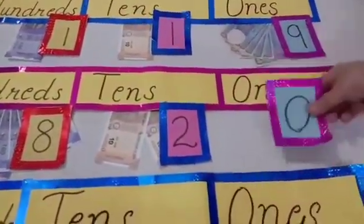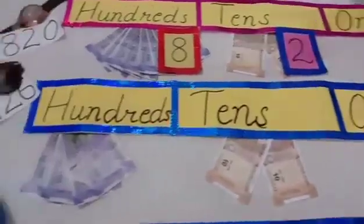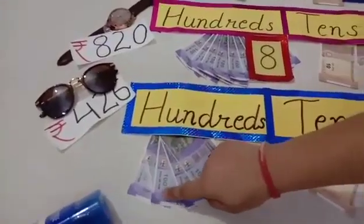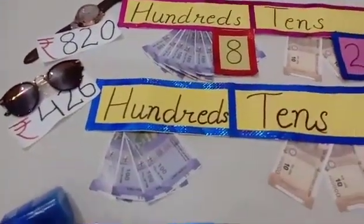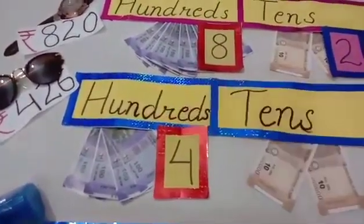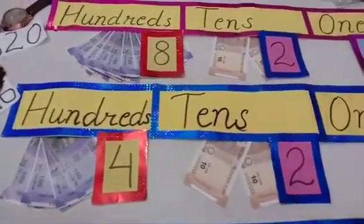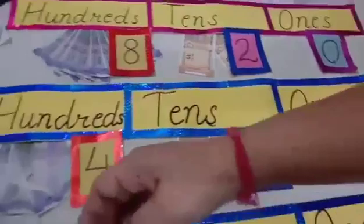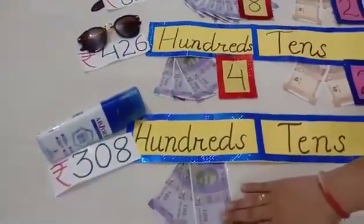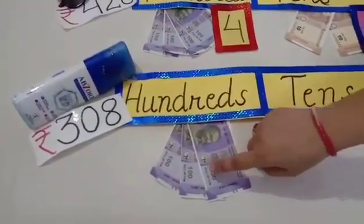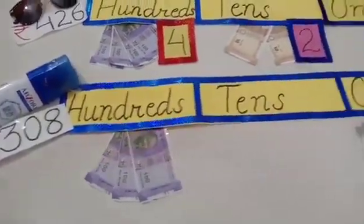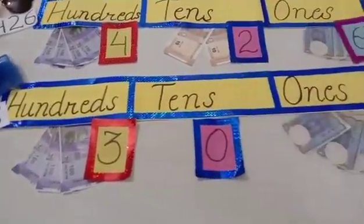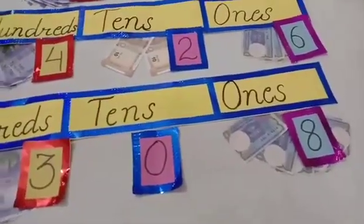And here for goggles, we have given 100, 200, 300, 400 rupees. So the hundreds are 4, the tens are 2, and the ones are 6. Now for talcum powder, we have paid Rs. 100, 200, 300. So there are 3 at the hundreds place, 0 at the tens place, and 8 at the ones place.